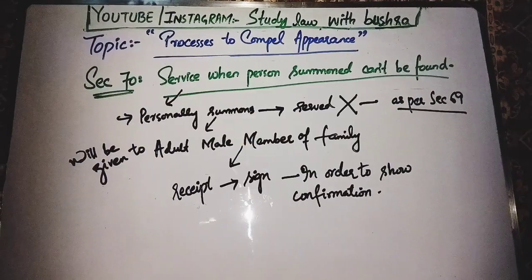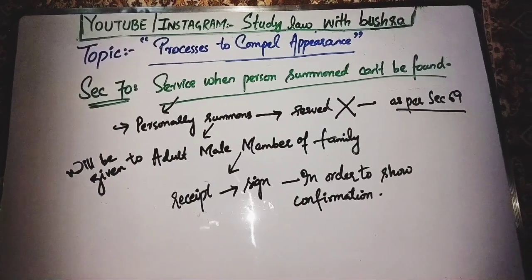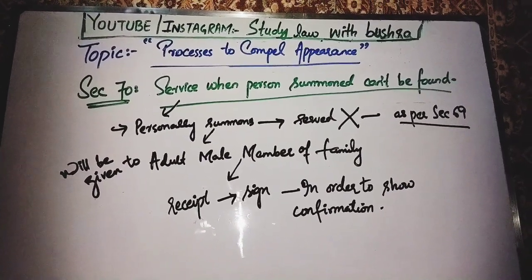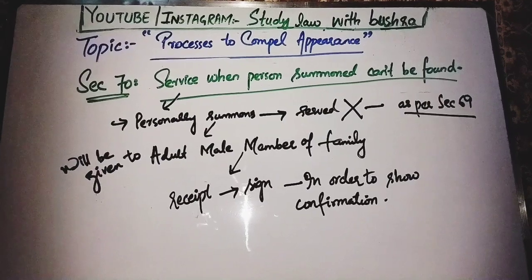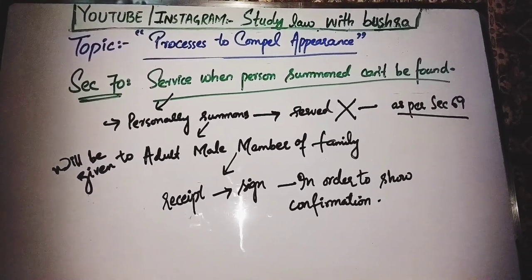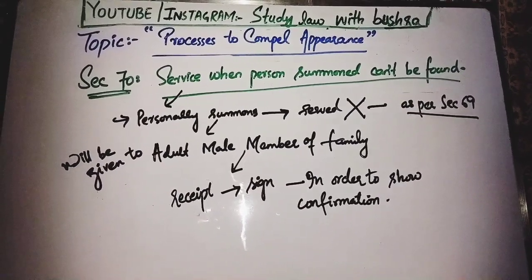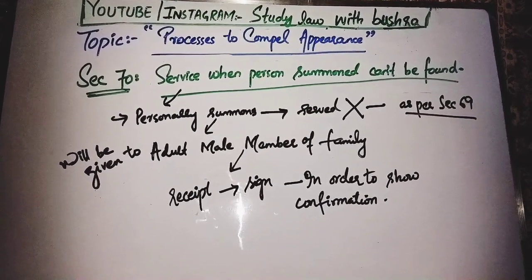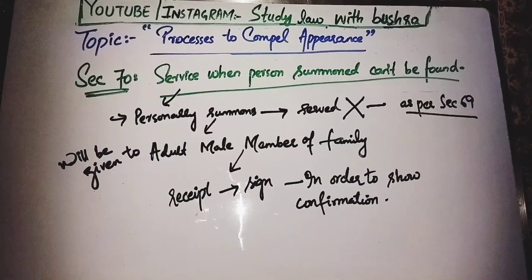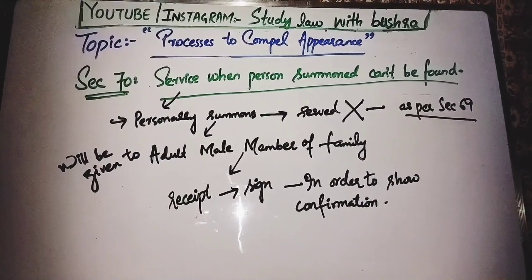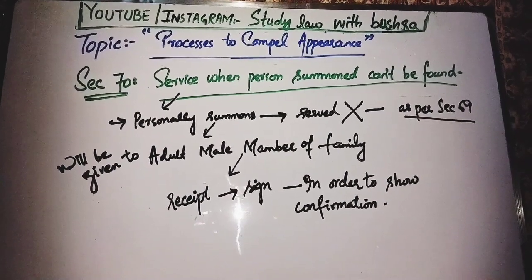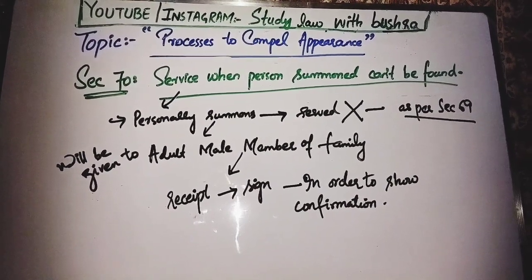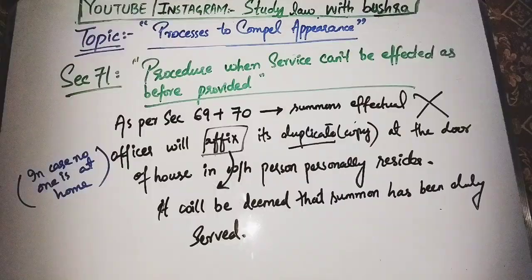Section 70 deals with service when the person summoned cannot be found. If the person to whom the summon was to be sent cannot be located, the copy of the summon will be given to the adult male member of that person's family. A signature is obtained on the back side of the summon copy as confirmation that the summon has been effectively served — the same principle discussed in Section 69.